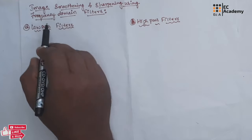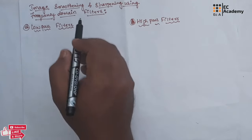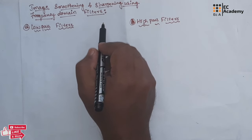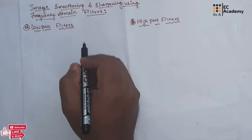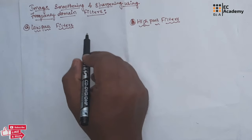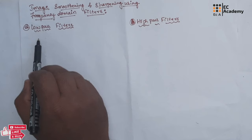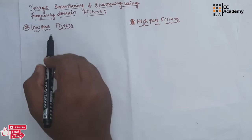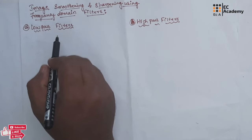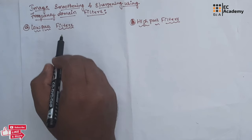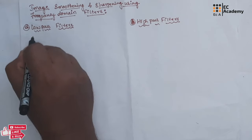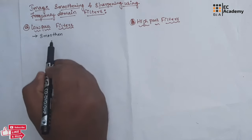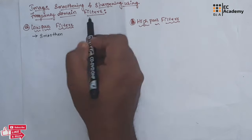In the previous lecture we understood about the frequency domain filters, where the filters in frequency domain remove the high frequency or low frequency component in an image. Filters in frequency domain can be classified into two types: low pass filter and high pass filter. Low pass filter removes the high frequency component and retains the low frequency component. The application of low pass filter is to smoothen the image; for image smoothening, low pass filter is used in frequency domain.